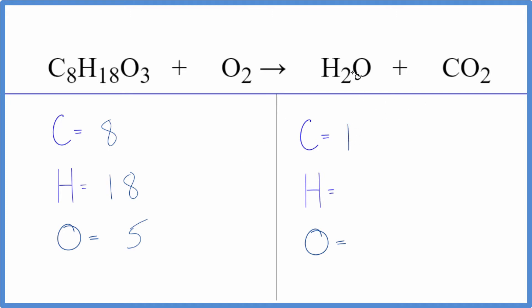On the product side we have 1 carbon, 2 hydrogens, and 1 plus 2, make sure you count all of them, 3 oxygen atoms. So this is a combustion reaction. We have this hydrocarbon plus oxygen and it produces water and carbon dioxide.